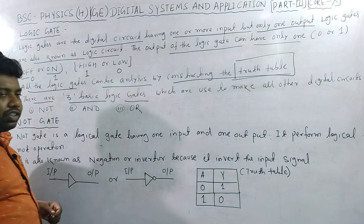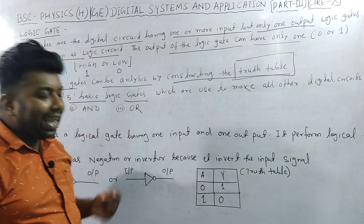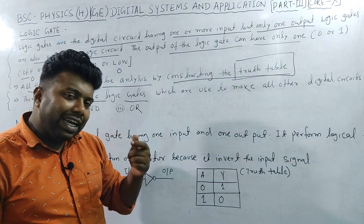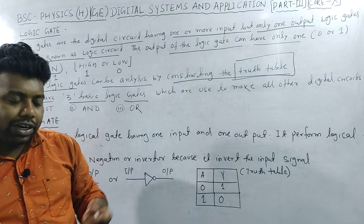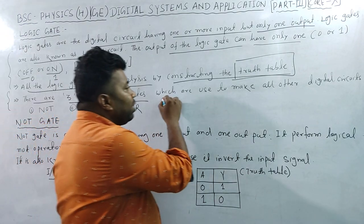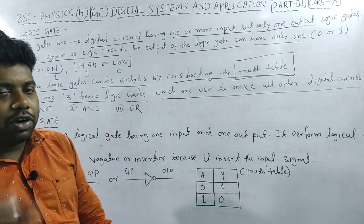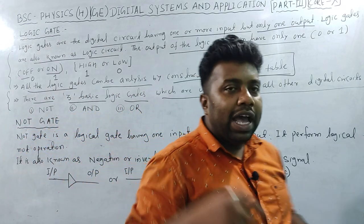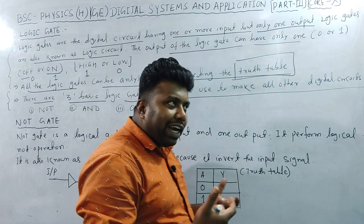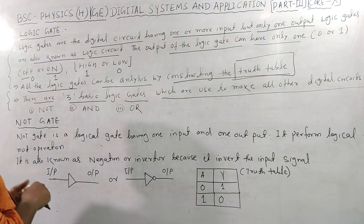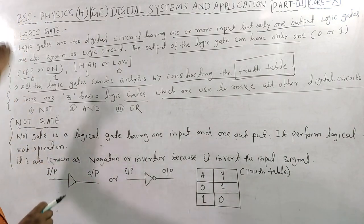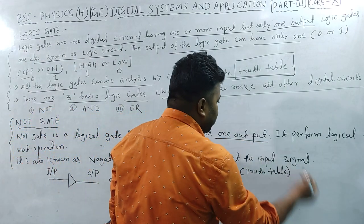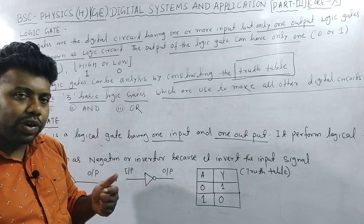There are generally three basic logic gates: the NOT gate, AND gate, and OR gate. These are the basic gates, and from these we can make combinational gates and universal gates. The NOT gate has one input and one output.